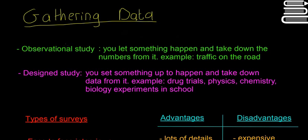First of all, there are about two different types of studies. You're either going to have your observational study. You let something happen and then you take down numbers or data from it. For example, if you want to count the colors of cars on the road, you just observe the traffic on the road. That's an observational study.